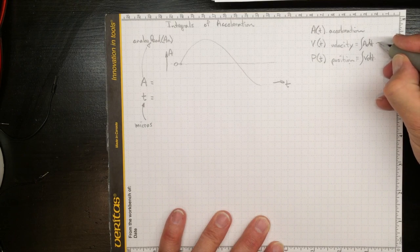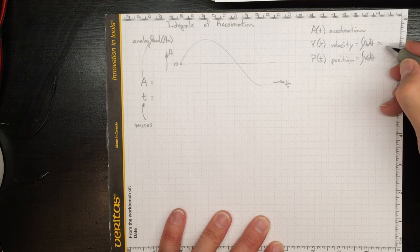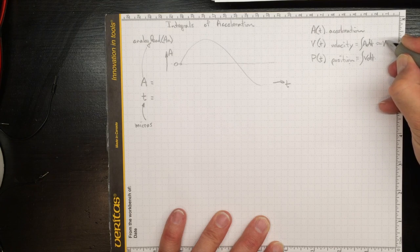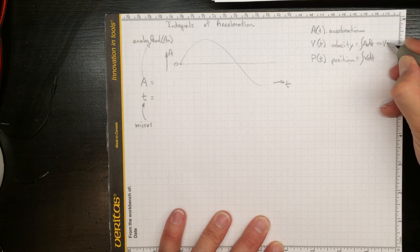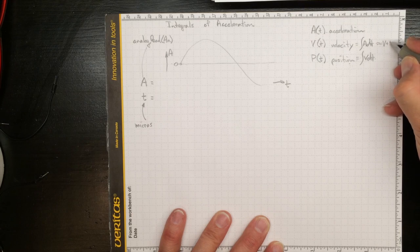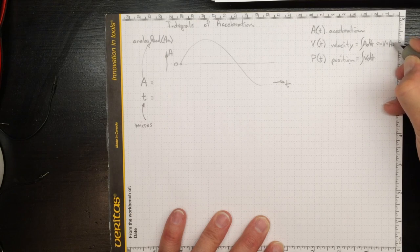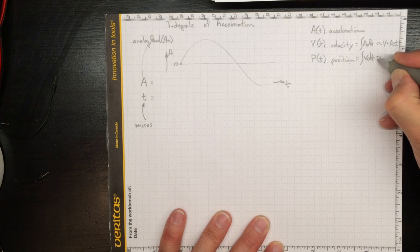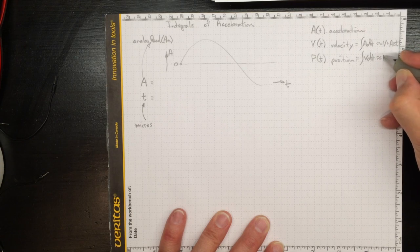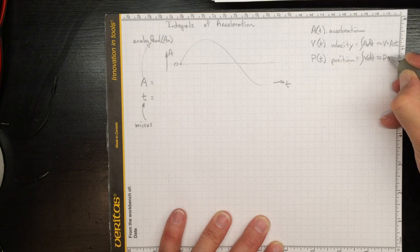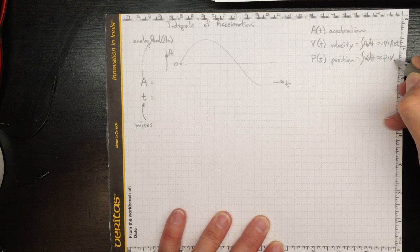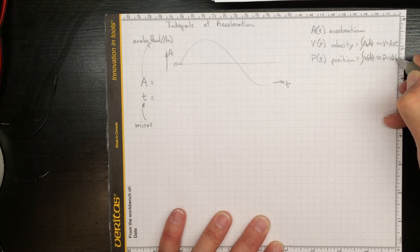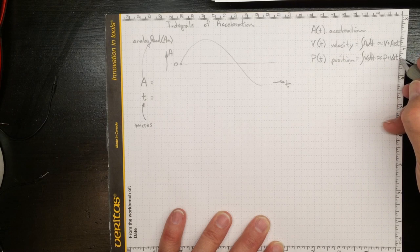So we can estimate the velocity as being whatever the velocity was plus some value of the acceleration times delta t. And we can estimate the position as whatever the position was plus some value of velocity times delta t as we go forward in time.